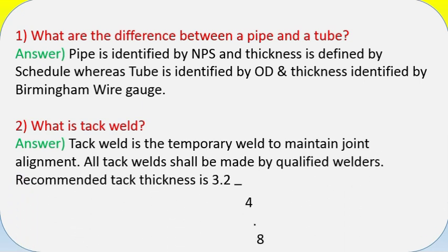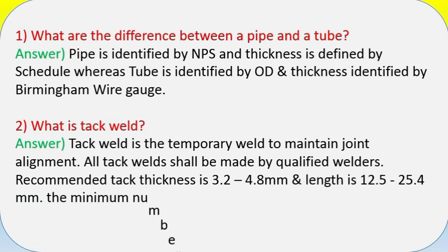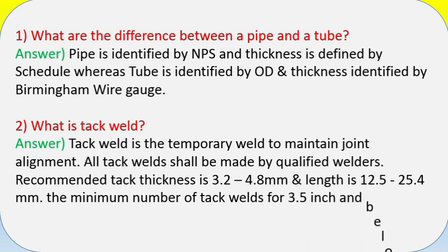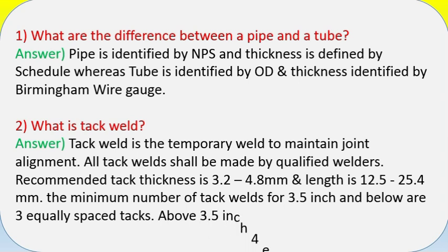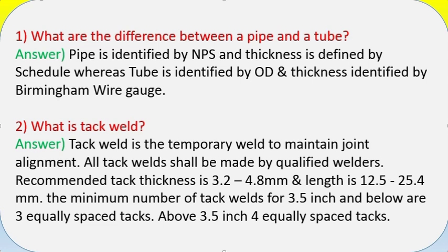Question 2: What is a tack weld? Answer: Tack weld is a temporary weld to maintain joint alignment. All tack welds shall be made by qualified welders. Recommended tack thickness is 3.2–4.8 mm and length is 12.5–25.4 mm. The minimum number of tack welds for 3.5 inch and below is three equally spaced tacks; above 3.5 inch, four equally spaced tacks.